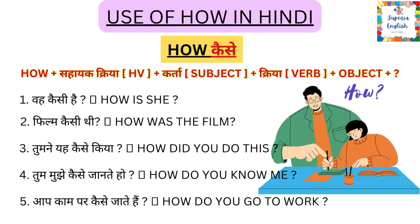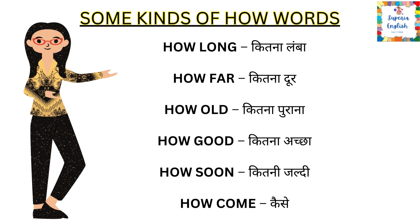Next word is 'how.' 'How' means 'kaisi' in Hindi. Examples: Vo kaisi hai — How is she? Film kaisi thi — How was the film? Tumne ye kaisa kiya — How did you do this? Tum mujhe kaise jaante ho — How do you know me? Aap kaam par kaise jaate hain — How do you go to work? Some 'how' words: how long (kitna lamba), how far (kitna door), how old (kitna purana), how good (kitna achha), how soon (kitna jaldi), how come (kaisa).